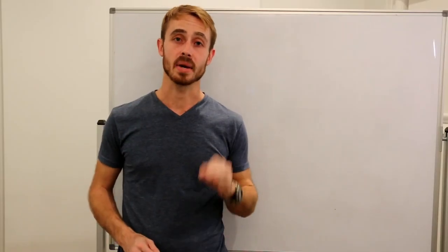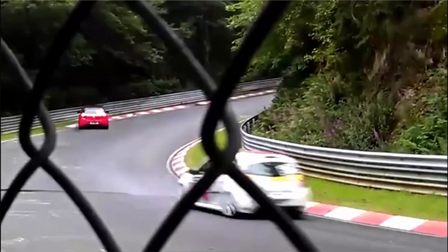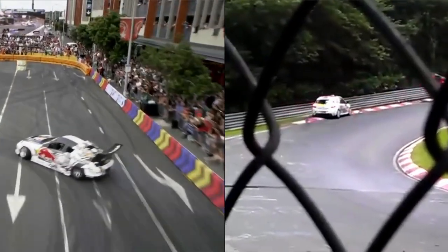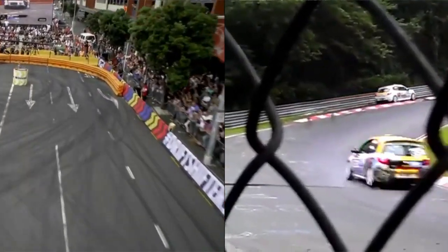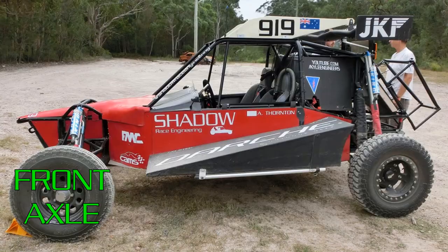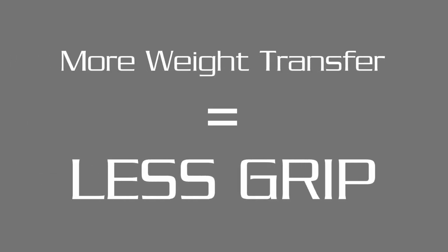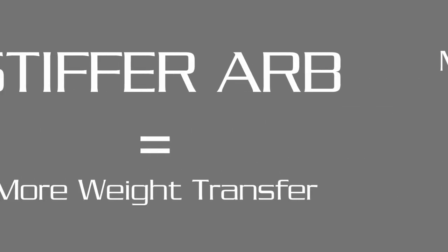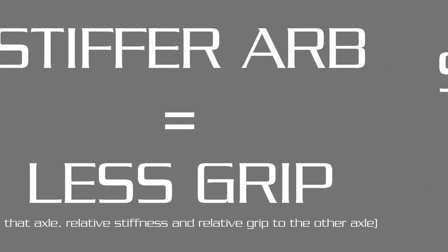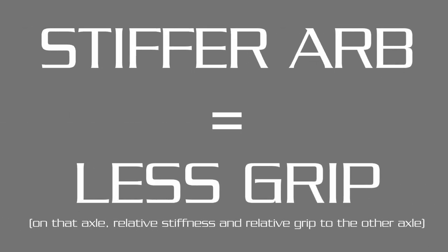Anti-roll bars alter handling by changing the balance of the car from understeer to oversteer. By changing the stiffness of the bars, you can change how much weight transfer occurs on the front axle versus the rear. More weight transfer equals less grip. Stiffer anti-roll bar on the axle equals more weight transfer, therefore stiffer anti-roll bar on the axle equals less grip.